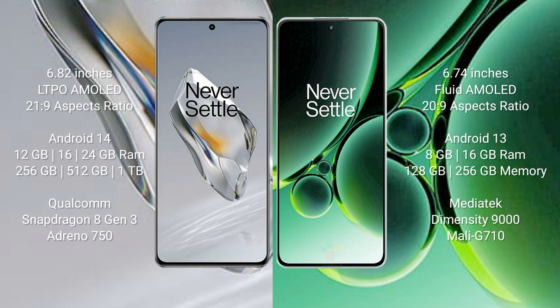OnePlus 12 comes with 12GB, 16GB, or 24GB RAM, and 256GB, 512GB, or 1TB internal storage. It is powered by a Qualcomm Snapdragon 8 Gen 3 processor with an Adreno 750 GPU.